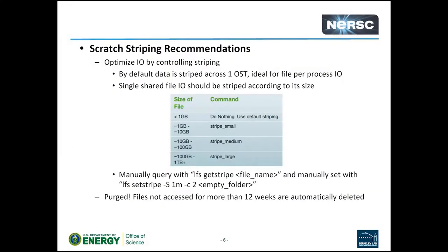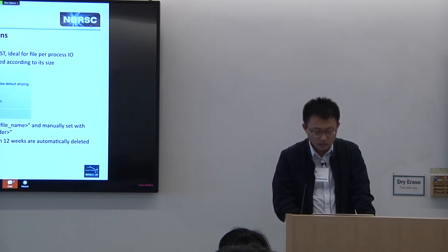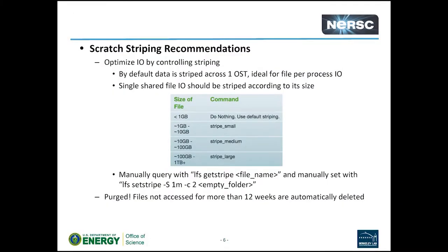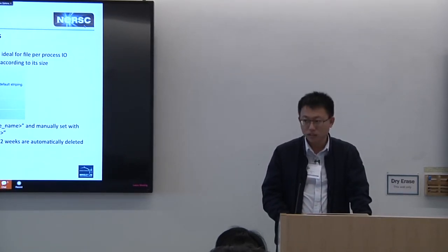There are some striping recommendations you can check in this table, depending on your file size. If the file is less than one gigabyte, probably just use the default striping. If it's very large — like 100 gigabytes or even one terabyte — we recommend using the 'stripe large' command, which uses 72 OSTs for the stripe count. You can also manually increase the stripe count to 200 or somewhere around 100.